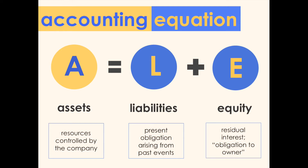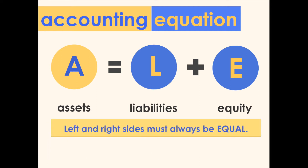Equity refers to the residual interest after deducting all liabilities from the total assets. I like to think of it as the total amount that the company owes the owner — it's something that's payable to the owner of the company. The accounting equation tells us that the left and right sides must always be equal, meaning assets must always equal the total of liabilities and equity.